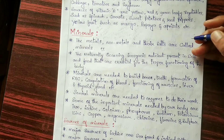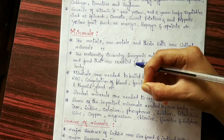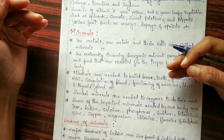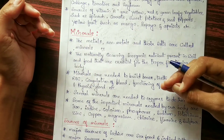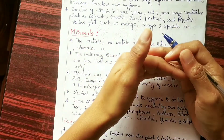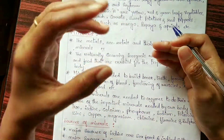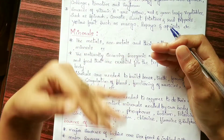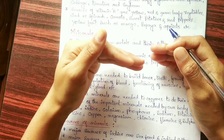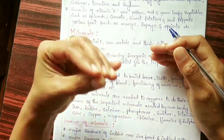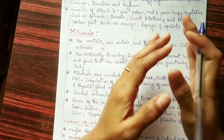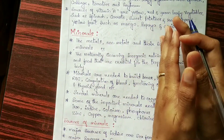Minerals are required in very minute quantities — unlike carbohydrates, fats and proteins which are needed in large quantities — but minerals must be present in our diet. While eating, you should not focus only on carbohydrates like rice. Your diet should include all the vitamins and minerals. Add salads, green leafy vegetables and fruits to ensure you get adequate minerals and vitamins.